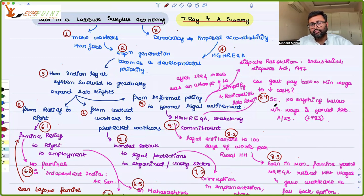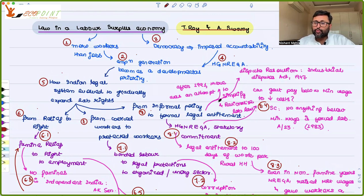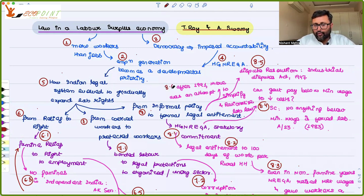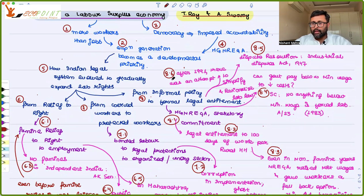Even when India got independent, we started framing laws to help in dispute resolution — for example, the Industrial Disputes Act 1947 — thinking along lines of giving rights to workers. But problems came after reforms. Many economists themselves started asking to rationalize labour laws. The argument was that saying you can't fire people — you have to seek permission from the government to retrench — makes it very difficult to operate, and that is not ease of doing business.